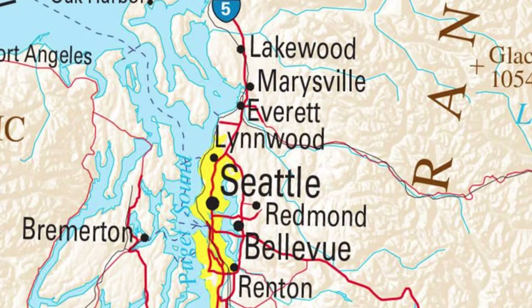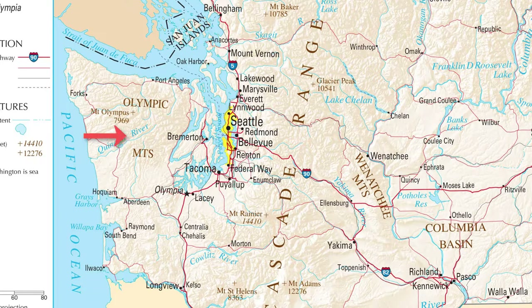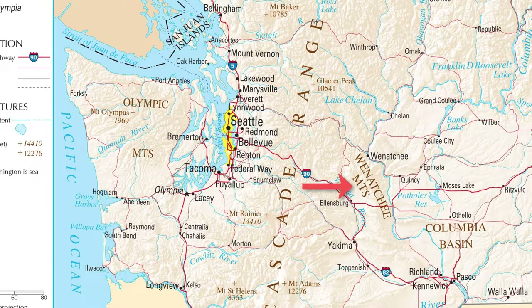Here you can see many cities in Washington State and their sizes. Here you can see three mountain ranges in Washington State. The Olympic Mountains are by the Pacific Ocean. The Cascades are in the middle. The Wenatchee Mountains are east of the Cascades and are smaller.